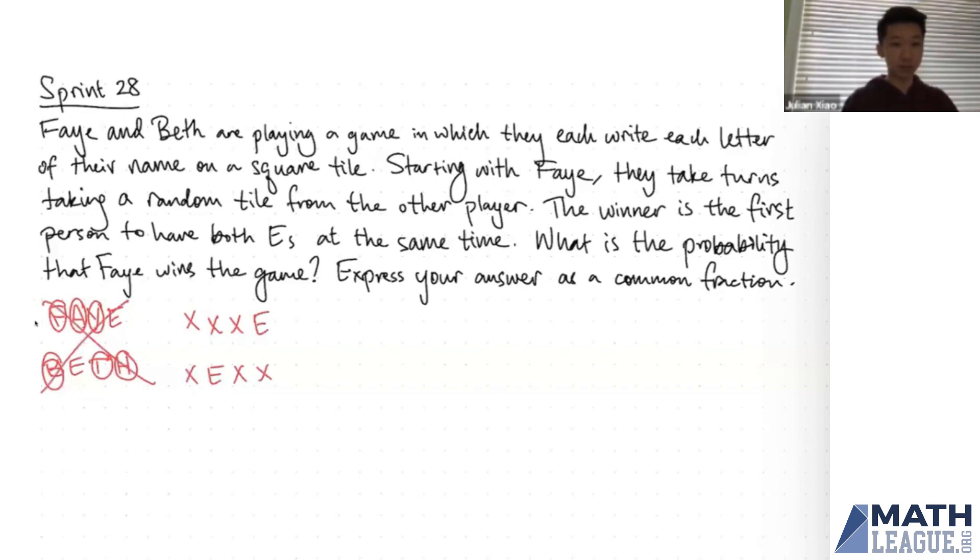And we need to find the probability that one player takes the E from the other player, because that's when they win. So because Faye starts first, Faye already has at least a one-fourth chance of winning the game on the first turn, which is just by taking Beth's E immediately.